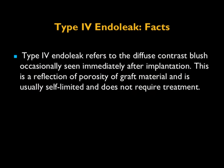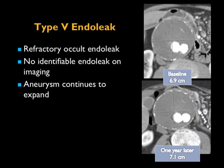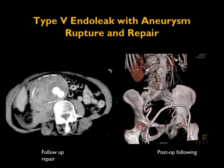Type four refers to diffuse contrast seen immediately after implantation — a reflection of graft material porosity, usually self-limited and not requiring treatment. Type five is a refractory occult endoleak, meaning you cannot see the reason why the aneurysm is increasing in size post repair, but it is enlarging. You can see the aneurysm here enlarging from 6.9 to 7.1 with no obvious endoleak. One year post embolization it was seven centimeters, two years later 7.6 centimeters, and eventually the aneurysm enlarged and ruptured with a retroperitoneal bleed. The patient subsequently had a fem-fem graft.